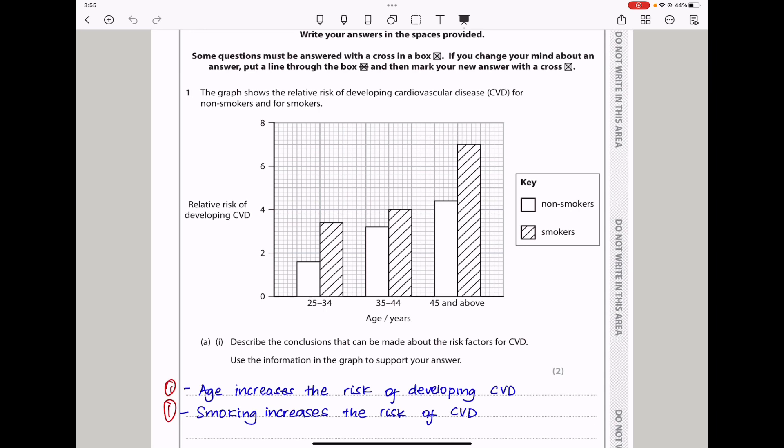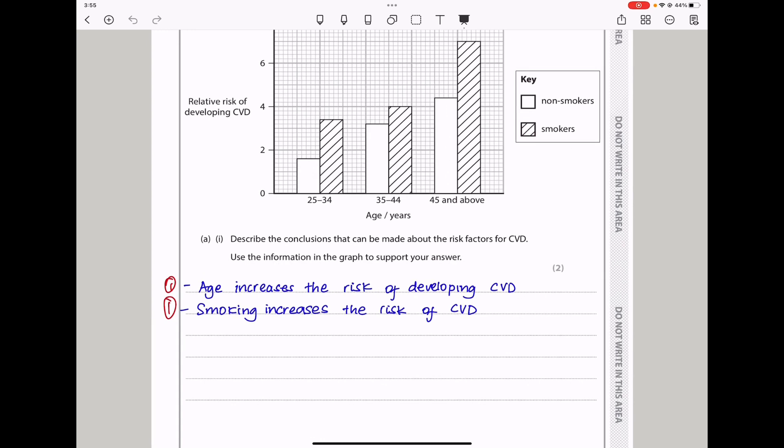This data is for non-smokers, and this is for smokers. Based on these results, we can see as age increases, there is an increase in relative risk of developing cardiovascular disease, but there is a greater risk among smokers than non-smokers. They say describe the conclusion that can be made about the risk factors for CVD and use the information in the graph to support your answer.